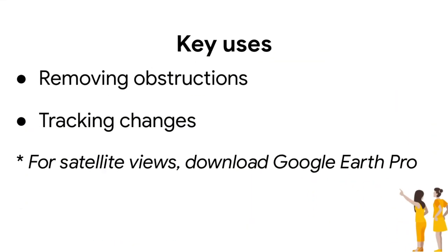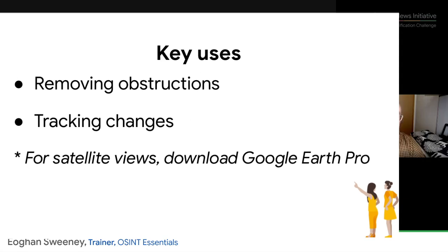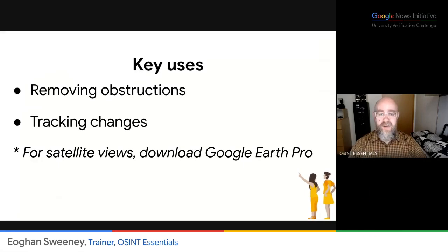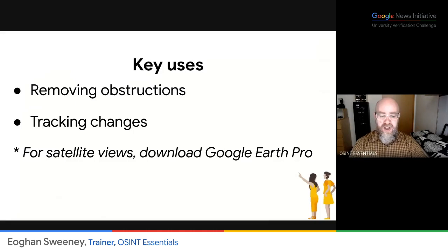So what are the key uses? As I said: removing obstructions — it could be vehicles, construction work, or other things. Then tracking changes over time. And don't forget that if you want historical satellite views, you will need to download Google Earth Pro.